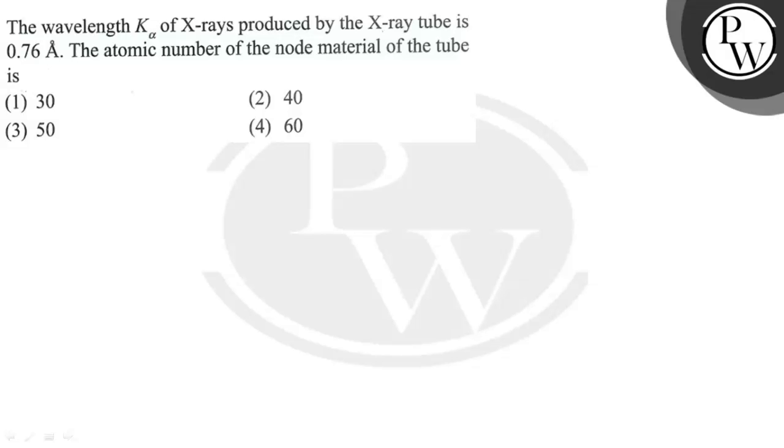X-rays produced by the X-ray tube is 0.76 angstrom. The atomic number of the anode material of the tube is: Option 1, 30. Option 2, 40. Option 3, 50. Option 4, 60.